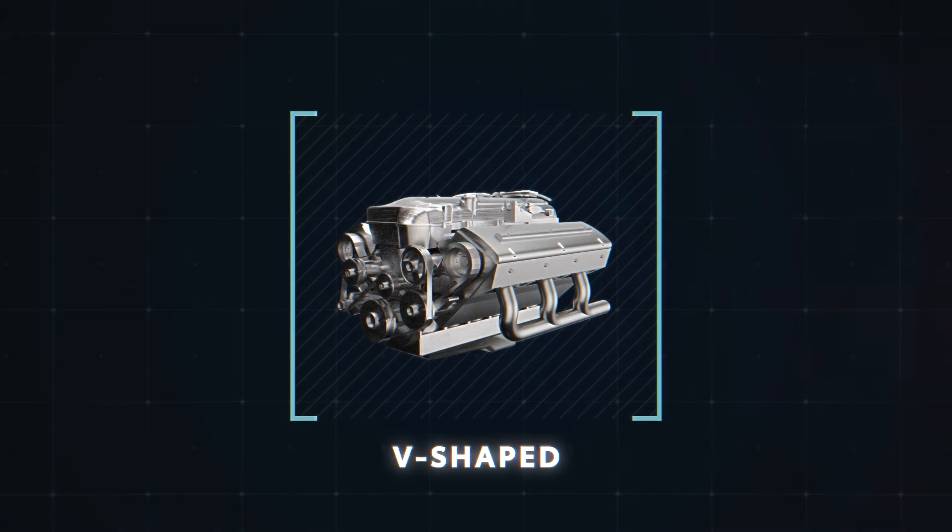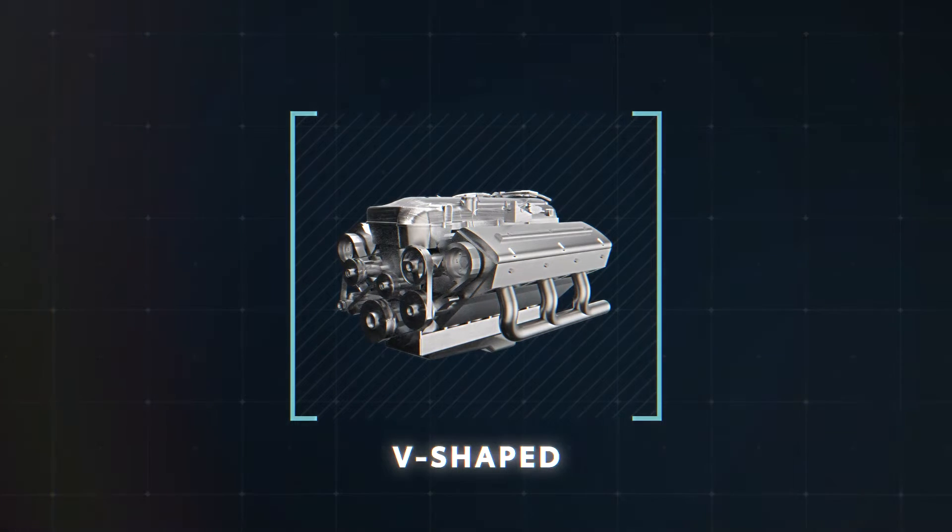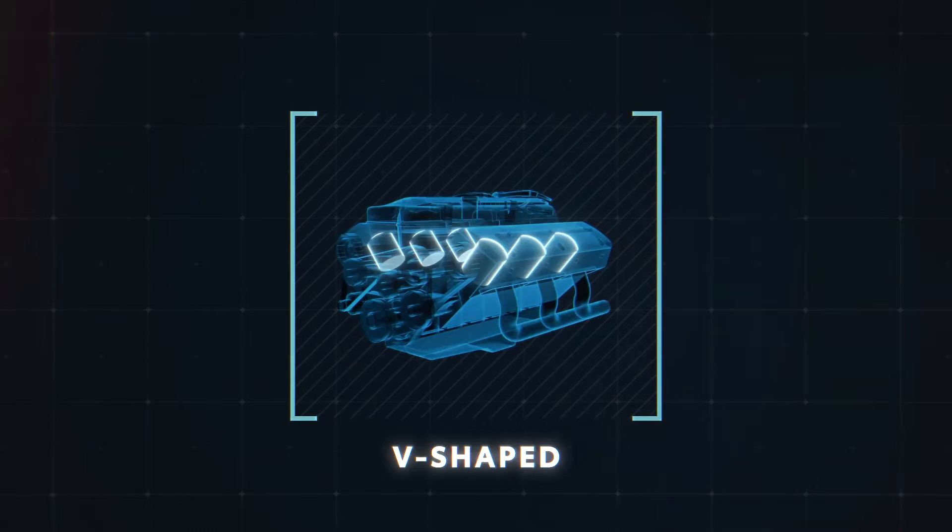Doing it this way effectively cuts the engine length in half, enabling it to fit more easily under the hood. So a V6, three cylinders on either side, creating a V-shape.